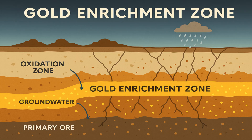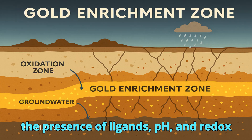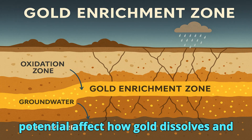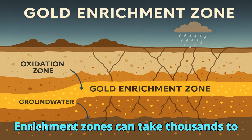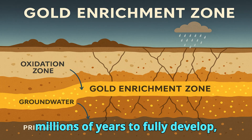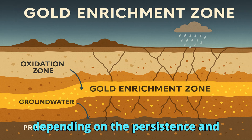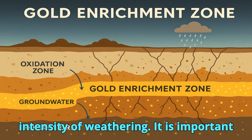Water chemistry also plays a role — the presence of ligands, pH, and redox potential affect how gold dissolves and re-precipitates. Time is another factor: enrichment zones can take thousands to millions of years to fully develop, depending on the persistence and intensity of weathering.